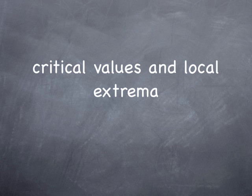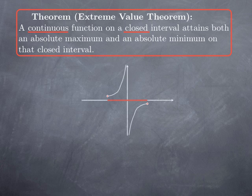We are now turning to critical values and local extrema. At the end of the previous video, we have seen the Extreme Value Theorem, stating that a continuous function on a closed interval has an absolute maximum and an absolute minimum on that interval. We have seen examples showing that the condition that the interval is closed is essential, and that the conclusion may fail if we don't have that.